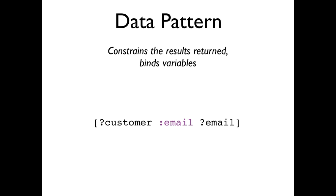A data pattern is a list with components for entity, attribute, value, and transaction. In this example, the entity is customer, the attribute is email, and the value is email. You can omit the tail portion of a data pattern that you don't care about. In this case, we have omitted the fourth transaction component. The keyword email is a constant, and constrains this query to say, find me only the datums that are about email. Customer and email are variables, and will be bound by the query engine, once for each matching datum.